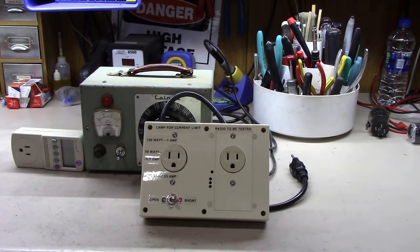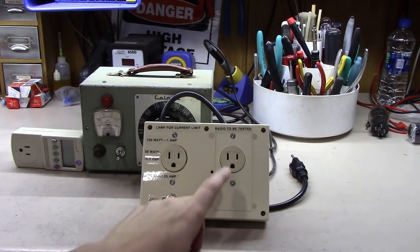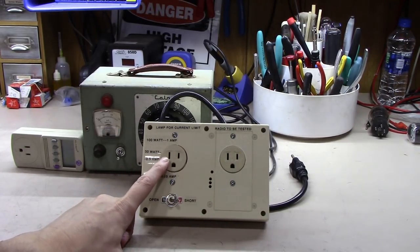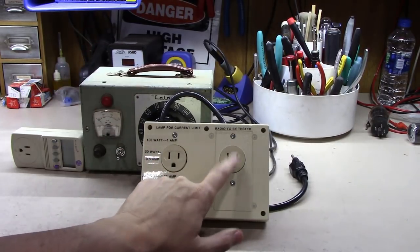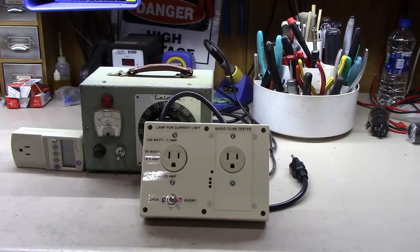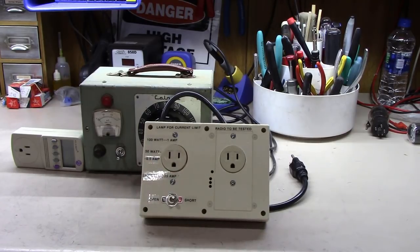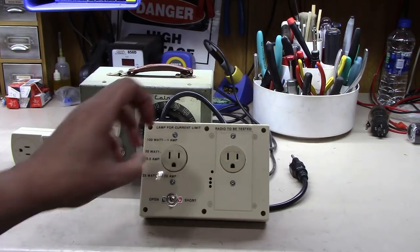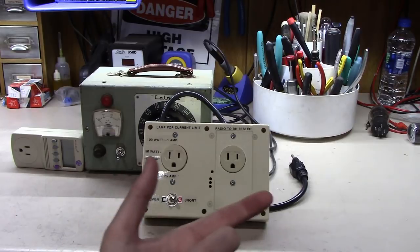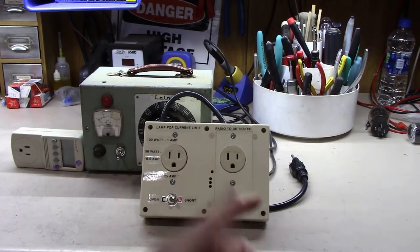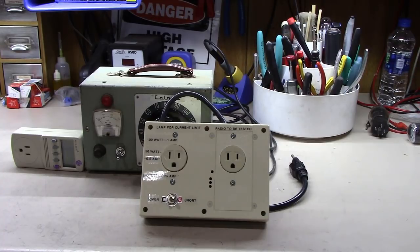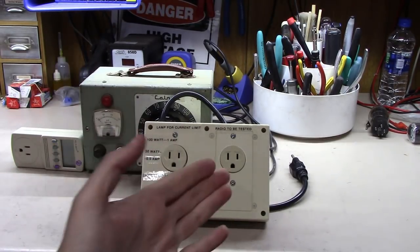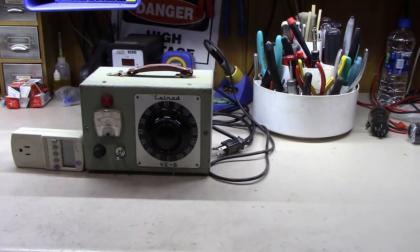What it does is it puts this light bulb in series with one of the legs of your power. So if there happens to be a short in your radio, the light bulb will actually light up and start drawing current instead of taking all the current to your device. It could save your life because that light bulb lighting up could be taking the current that maybe is going across your body if you got into a tube unit and touched something you shouldn't have. It's optional, but I highly recommend it.